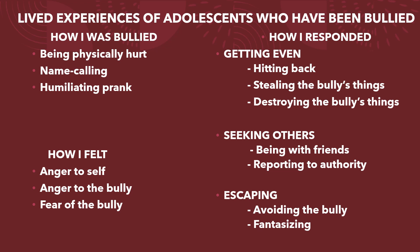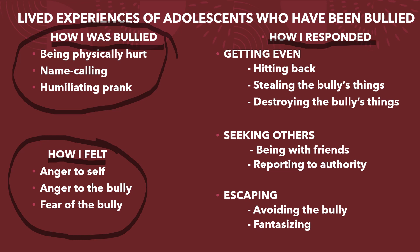Now that you have identified what the codes are about, organize your codes into themes. There are three themes: bullying acts, feelings, and responses. You may do a further clustering of the themes under responses — there are similarities and patterns. Group the similar themes together into sub-themes. Under responses: getting even — which includes hitting back, stealing the bully's things, and destroying the bully's things. Another sub-theme is seeking others — which includes being with friends and reporting to authority. And another sub-theme is escaping — which includes avoiding the bully and fantasizing. You also have the option of renaming your themes. Bullying acts becomes 'How I Was Bullied.' Feelings becomes 'How I Felt.' And responses becomes 'How I Responded.' Under How I Responded, we have Getting Even, Seeking Others, and Escaping.